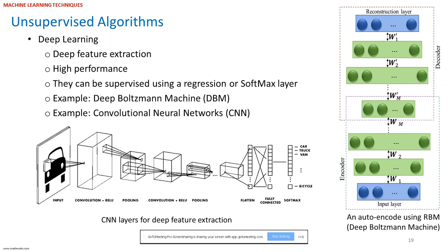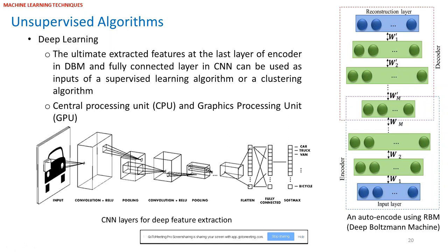Deep learning algorithms can work with fMRI, EEG, kinematic time series, EMG records, test scores, and any large-dimensional data sets. Another famous deep learning algorithm is convolutional neural networks, recommended for image processing problems. Deep Boltzmann machine is better in CPU systems and convolutional neural networks are better in GPU systems — though CNN can run on CPUs, it is tens of times faster on GPU systems. The Boltzmann machine also accounts for higher memory capability compared to just the restricted Boltzmann machine.